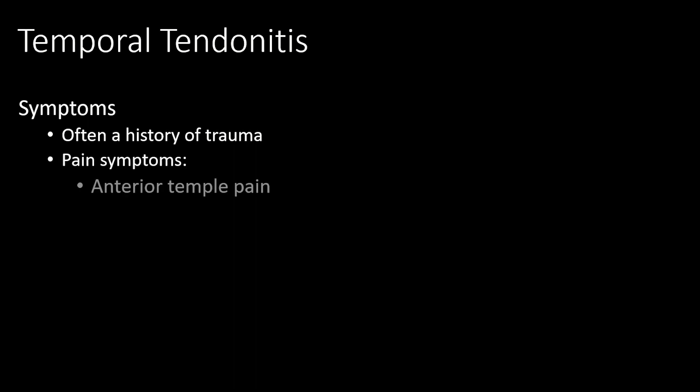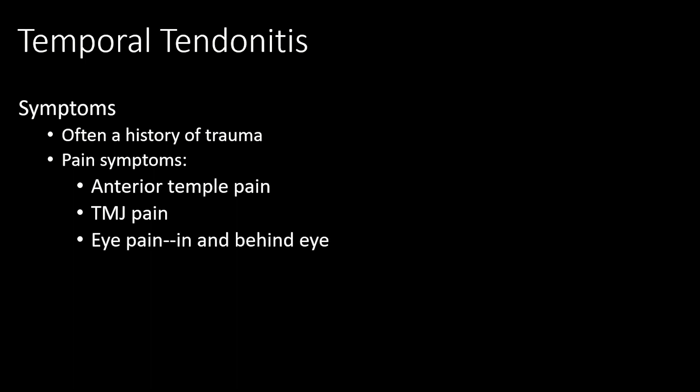Some of the symptoms of temporal tendonitis are as follows. Number one, there's often a history of trauma — these people have been struck in the jaw by a sucker punch, been boxing, or in sporting accidents like being hit in the face with a volleyball, soccer ball, or playing football. The painful symptoms are pain in the anterior portion of the temporalis muscle, right above your ear, like a temporal-type headache. Number two is TMJ pain, so sometimes people think it's the TMJ when it's really not.